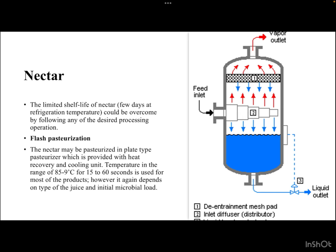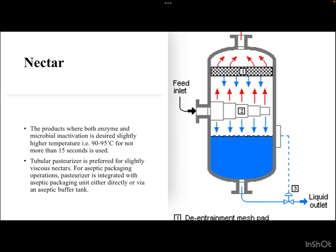Regarding pasteurization of nectar: the limited shelf life of nectar at refrigerated temperatures can be overcome by pasteurization methods. Flash pasteurization uses a plate-type pasteurizer with heat recovery and cooling, at 85 to 90 degrees Celsius for 15 to 60 seconds, depending on juice type and initial microbial load. Where both enzyme and microbial inactivation is needed, 90 to 95 degrees Celsius for not more than 15 seconds is used. Tubular pasteurizers are preferred for viscous nectars.